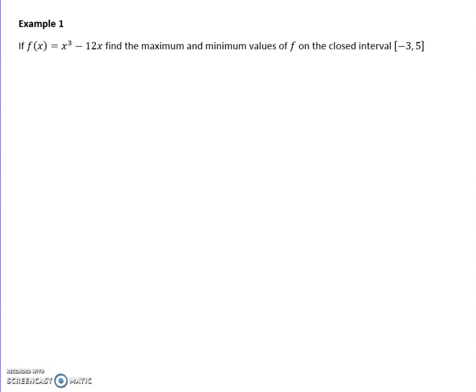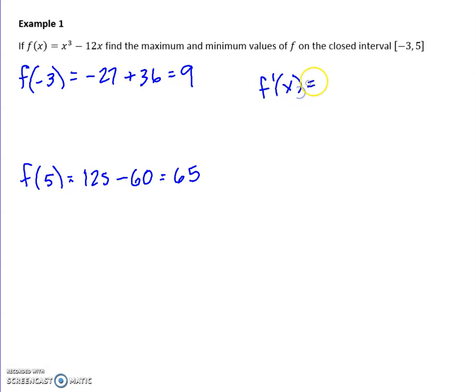So let's look at that in the actual process. So I want to find the maxes and mins on this closed interval. So I actually do my endpoints of my intervals first, because remember, those endpoints could be your max and min. So let's plug in negative 3 to our value. So if I plug in negative 3 into this, let's see, I get negative 27 plus 36, which ends up giving me positive 9. When I plug in 5, 5 cubed is 125 minus 60, giving me 65.